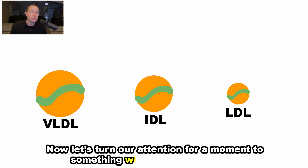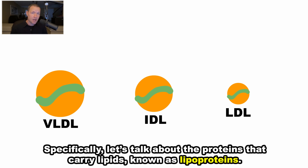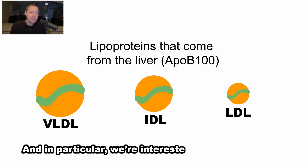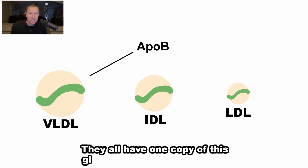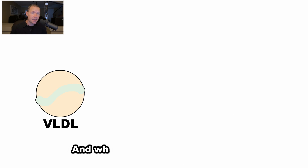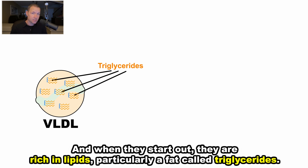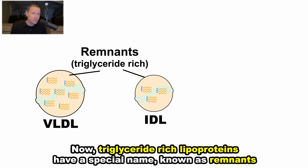Now let's turn our attention to something within the human body. Specifically, let's talk about the proteins that carry lipids, known as lipoproteins. In particular, we're interested in lipoproteins that come from the liver, as they are the most common. They all have one copy of this giant protein known as ApoB. When they start out, they are rich in lipids, particularly a fat called triglycerides. Triglyceride-rich lipoproteins have a special name, known as remnants.